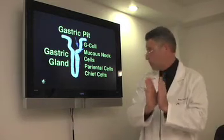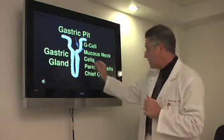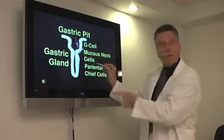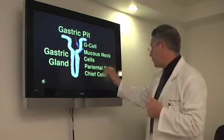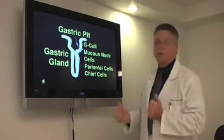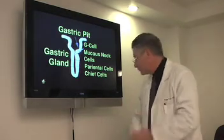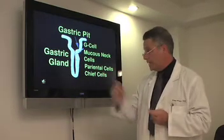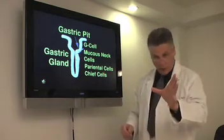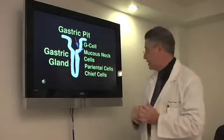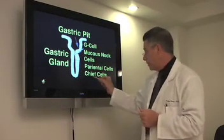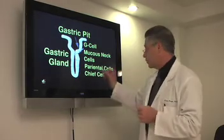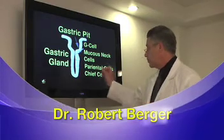These cells protect all of this area. Right underneath there you have the parietal cells, which produce HCl — the acid you have to have to keep the pH low, especially in the stomach. We also mentioned the chief cells, which work alongside the HCl.